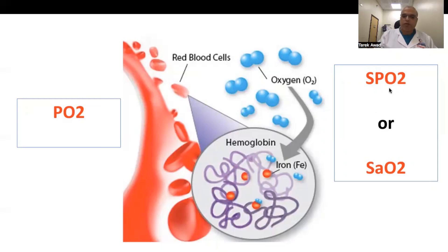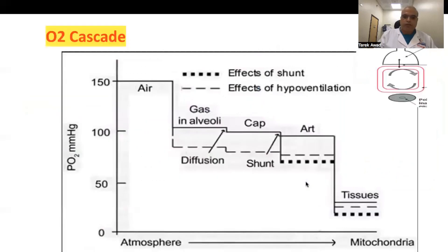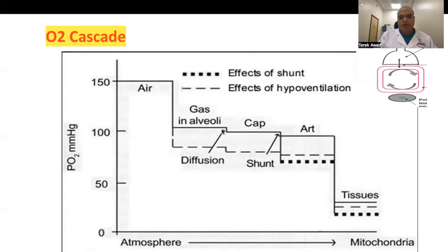PO2 represents the pressure of oxygen in our plasma and is very important for delivery of oxygen to our tissue. Oxygen on the RBCs is represented by SpO2 when measured by pulse oximeter, or SaO2 when measured by an oxygen analyzer. This is the oxygen cascade — how oxygen is delivered to our body depending on pressure. Because oxygen moves to our tissue by diffusion, it must travel from higher pressure to lower pressure. At sea level, atmospheric pressure is about 150 mmHg, dropping to about 100 in the alveoli, then into the capillaries, reaching tissue below 50, and finally the mitochondria where the pressure is zero.